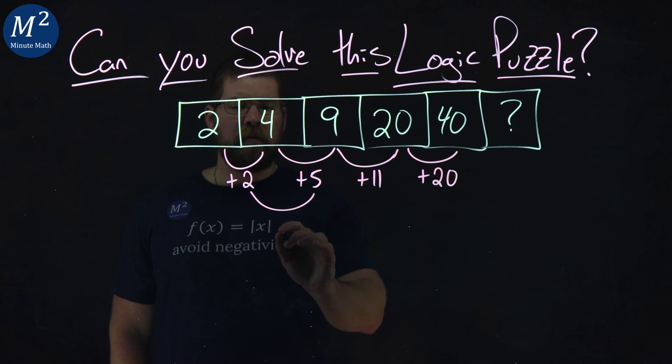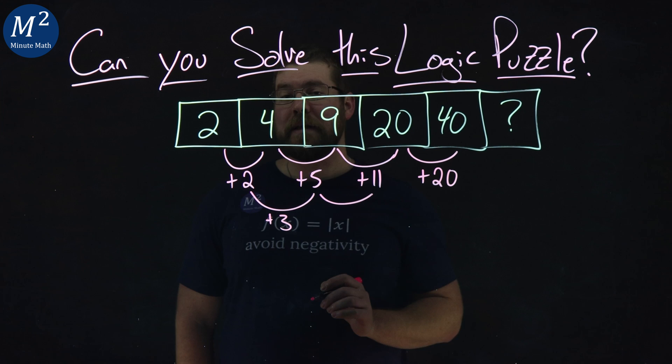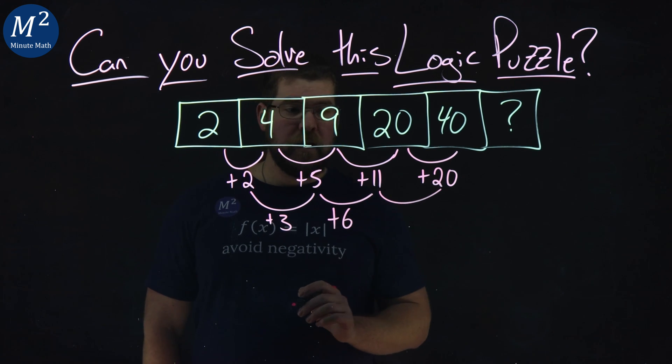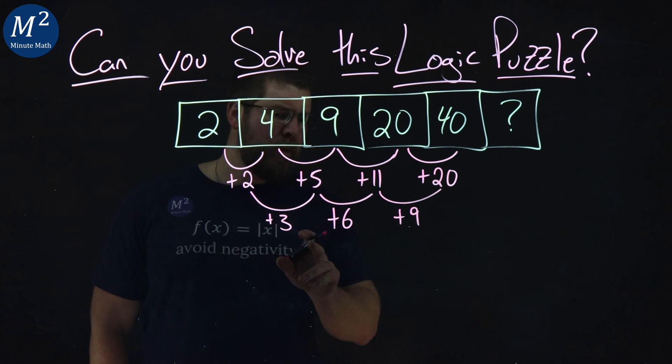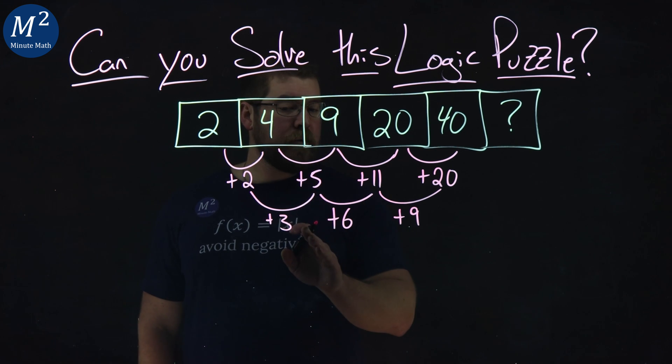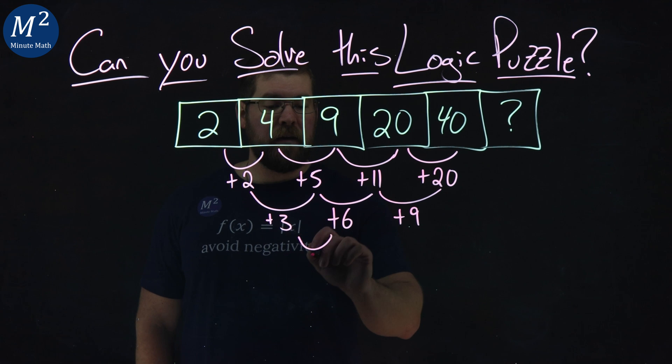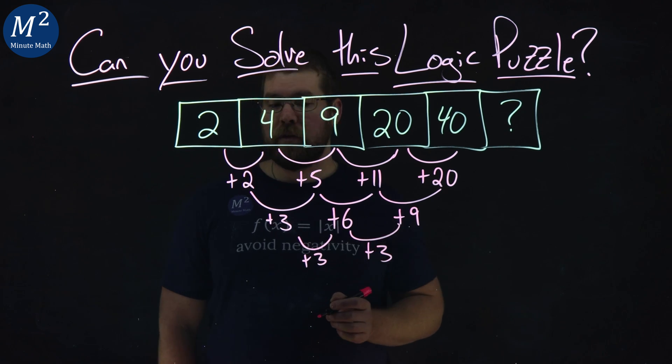From 2 to 5, that's a plus 3. From 5 to 11, that's a plus 6. And from 11 to 20, we have a plus 9. And I think you might be able to see this now. The difference on the next level down is increasing by 3 each time. 3 to 6 is a plus 3, and 6 to 9 is a plus 3.